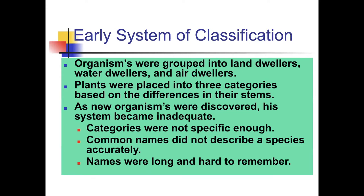Aristotle grouped organisms into three major groups: land dwellers, water dwellers, and air dwellers, based on where they spent most of their lives. Plants were placed into three categories based on differences in their stems and how tall they grew. As new organisms were discovered, his system became inadequate—categories were not specific enough, common names did not describe a species accurately, and names were long and hard to remember.